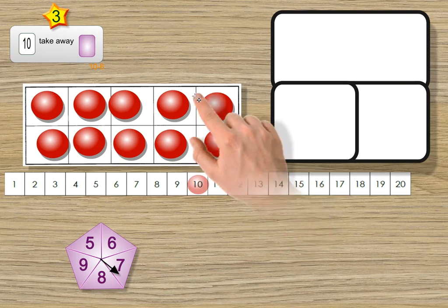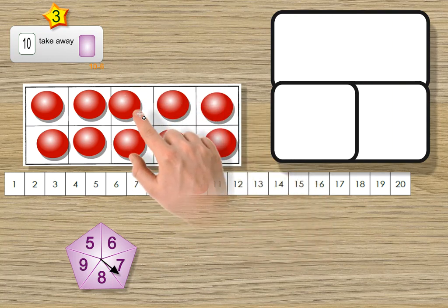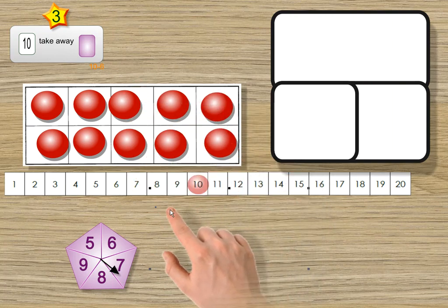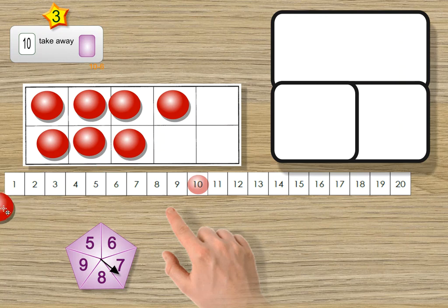So we know that I'll be taking 7 of these away. So do it, Mr. Hallam. 1, 2, I've taken away 2, 3, 4, 5, 6, 7.